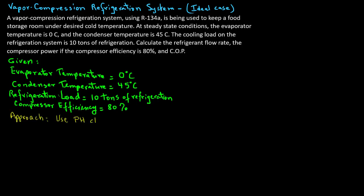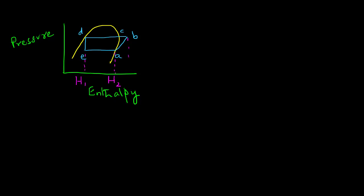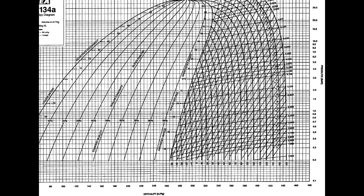We are going to use the pressure-enthalpy charts to obtain the values for H1, H2, and H3. As a reminder from a previous tutorial, we will quickly draw a pressure-enthalpy sketch where we have the refrigeration cycle drawn for an ideal case. We will label these points as E, A, B, C, D, and note that there are three enthalpies important for our calculations: H1, H2, and H3.